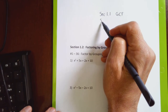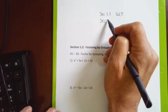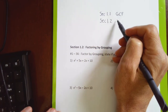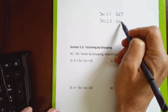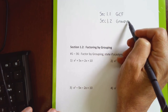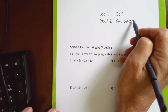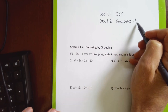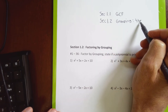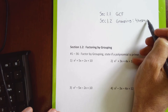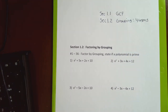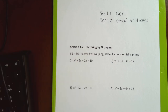In section 1.2 we're going to learn a technique called factoring by grouping. This technique is specifically used when a problem has exactly four terms. I probably wouldn't use grouping if a problem has more or less than four terms. Factoring by grouping works when a problem has four terms.